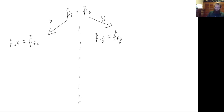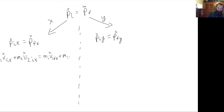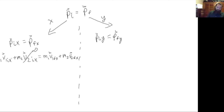The initial momentum in the x-direction — m1 v1 initial x plus m2 v2 initial x — equals m1 v1 final x plus m2 v2 final x. Since mass 2 was initially at rest, that term goes to zero. Then to get the x-component of each velocity we need to do some trigonometry, and if we do that we get the following equation.